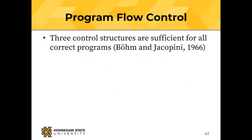Three control structures are sufficient for all correct programs — this is the structured program theorem. It was proven by Italian computer scientists Boehm and Jacobini in 1966.